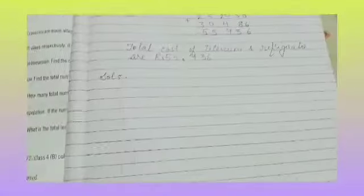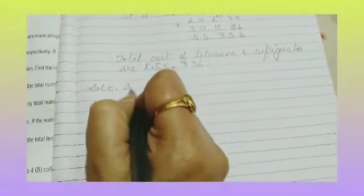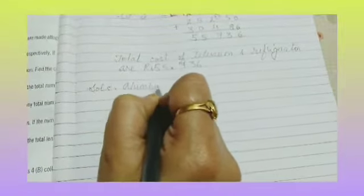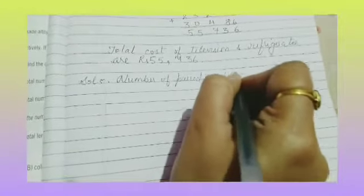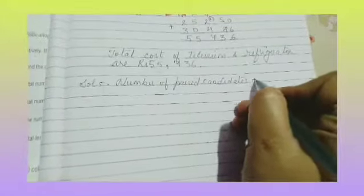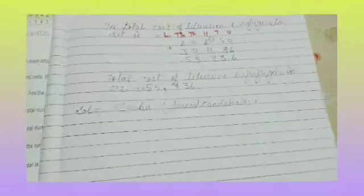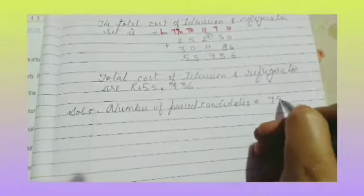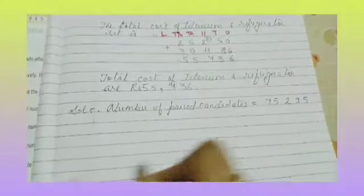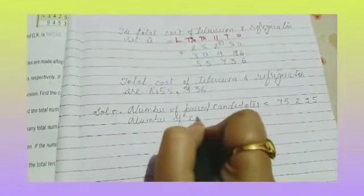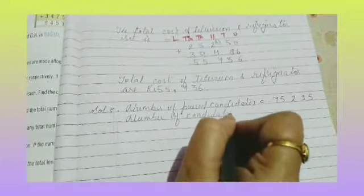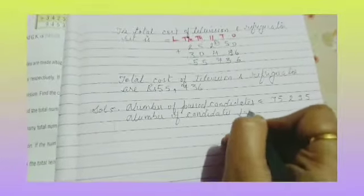You can copy question number 5 in your classwork. Number of passed candidates: 75,295. Number of candidates failed: 28,240.